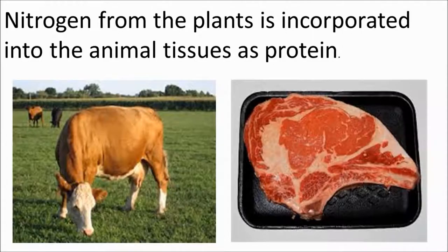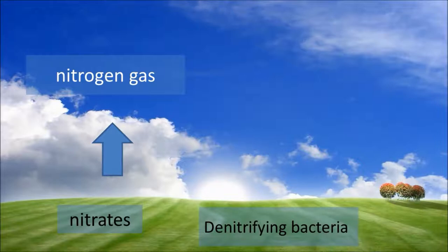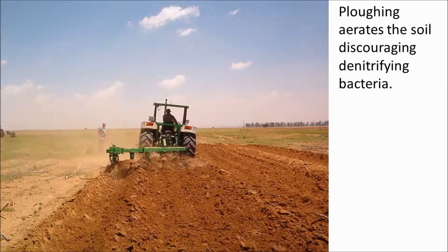The plants might then be eaten by an animal, and their biomass is used to produce animal protein. In some conditions you can get denitrifying bacteria in the soil, and these break down nitrates and return the nitrogen to the air. Farmers don't want these bacteria in their soil — they want the nitrogen to stay in the soil. Denitrifying bacteria tend to live in waterlogged soil, so improving drainage reduces this effect and makes the soil more fertile.